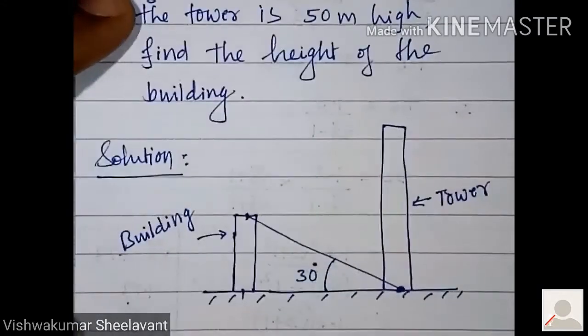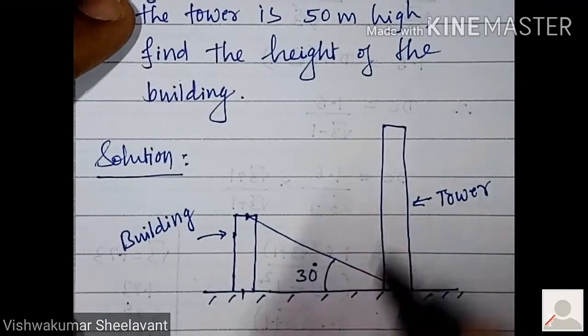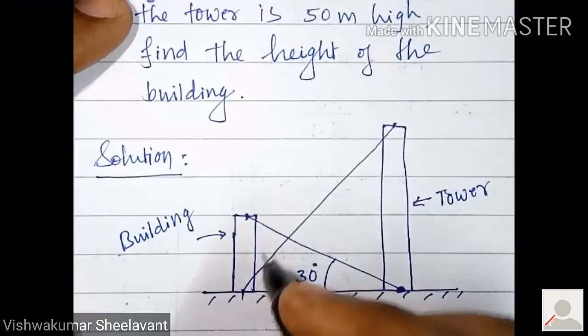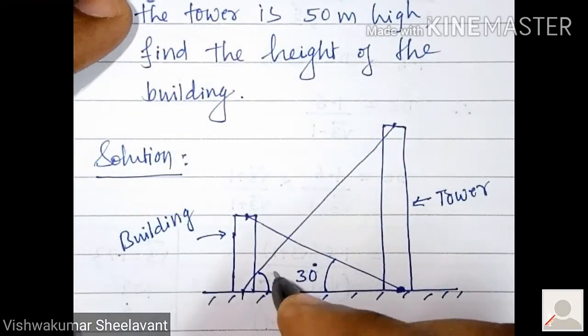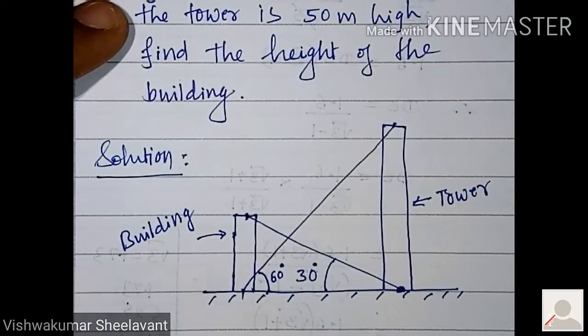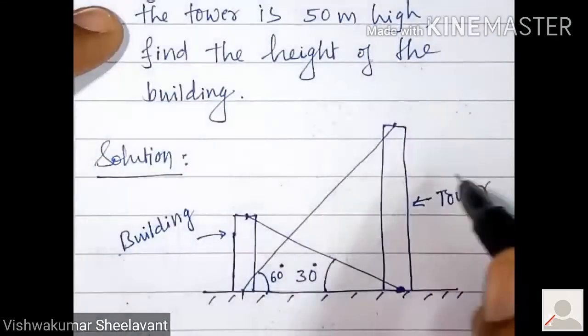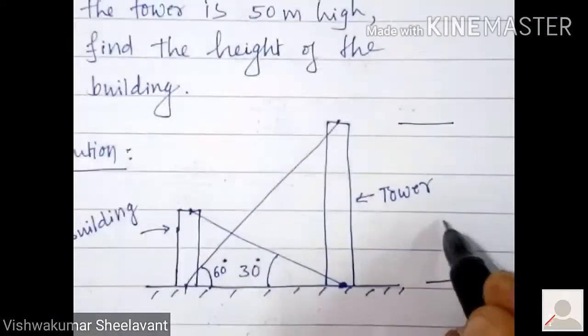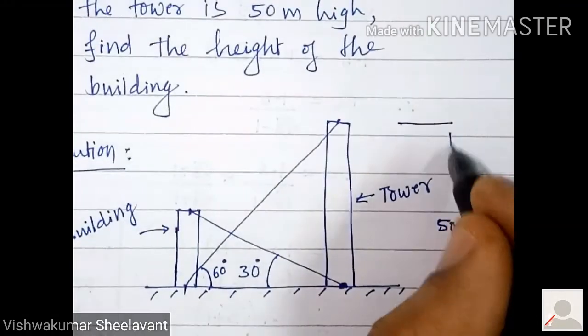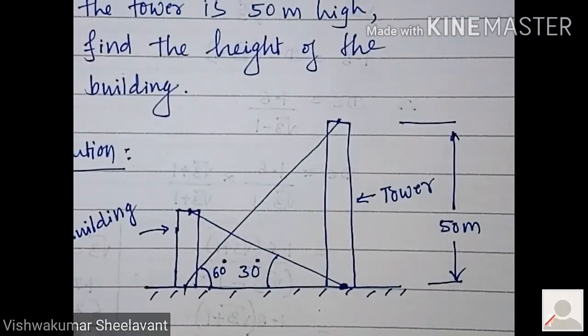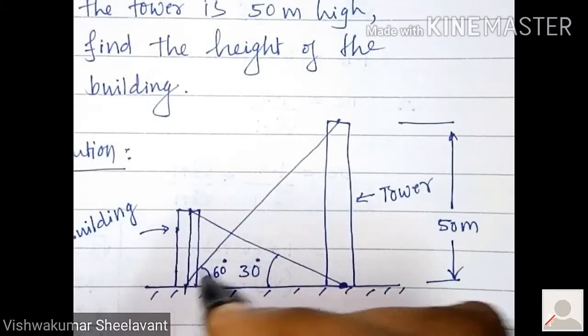Tower height is 50 meters. From the foot of the building, if you see the tower top, then angle of elevation is 60 degrees. Tower height is 50 meters.